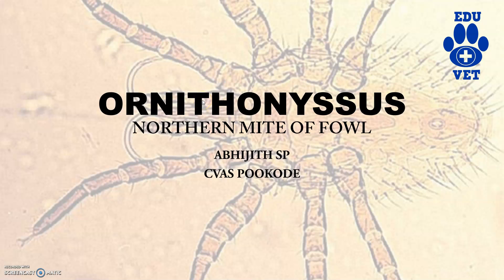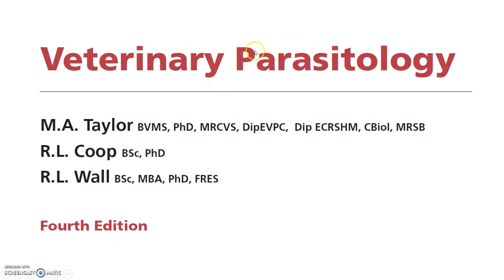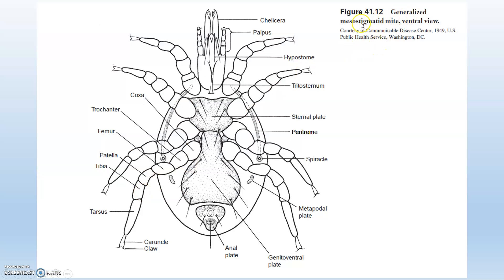From the word itself, we can know that it belongs to the 'ornitho' prefix. These are the northern mites of poultry, or northern mites of Ornithonyssus. Ornithonyssus is a mite of the genus from the family Macronyssidae. The taxonomy moves through Animalia, Arthropoda, Arachnida, Mesostigmata, family Macronyssidae, and genus Ornithonyssus. This is the generalized mesostigmatic view which we have seen in the previous video on Dermanyssus.